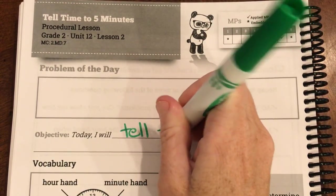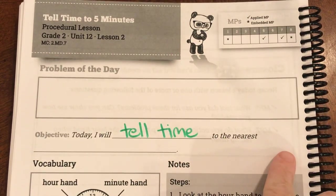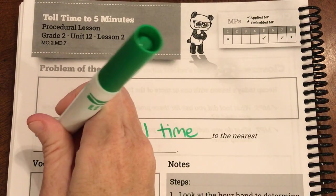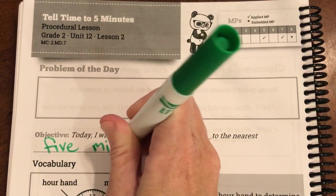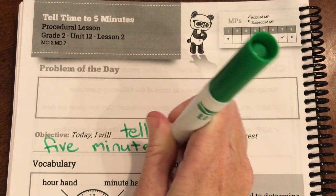So our objective or our goal today is: today I will tell time to the nearest five minutes.